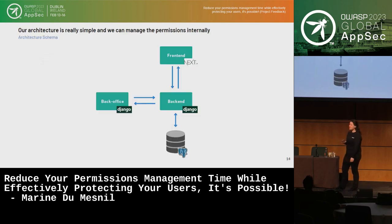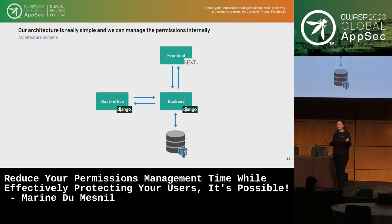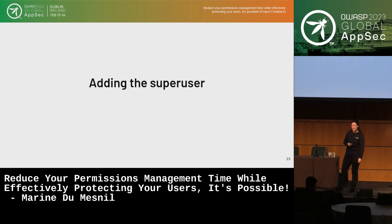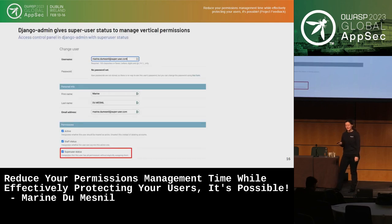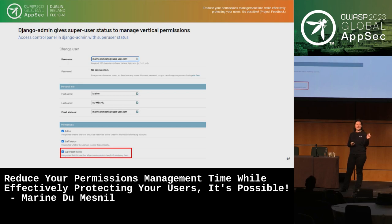At that time, our architecture was really simple. We decided to manage the permissions in Django internally, because Django already has some management tools. The super user in Django is really simple — you just tick a box and you have a super user. But then that super user is able to do everything: create users, change resources. It's basically as if you gave a user access to your production database.